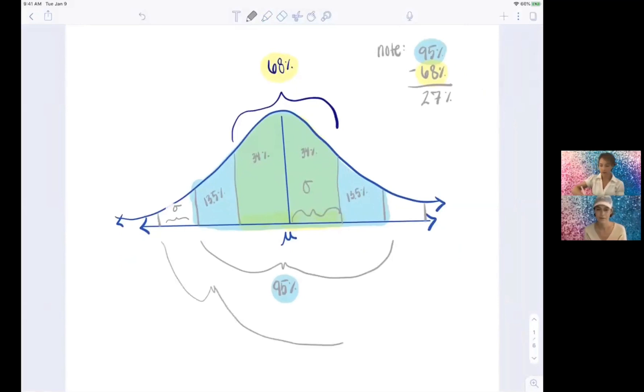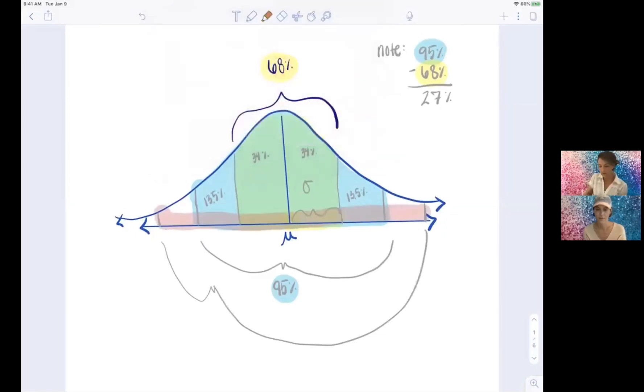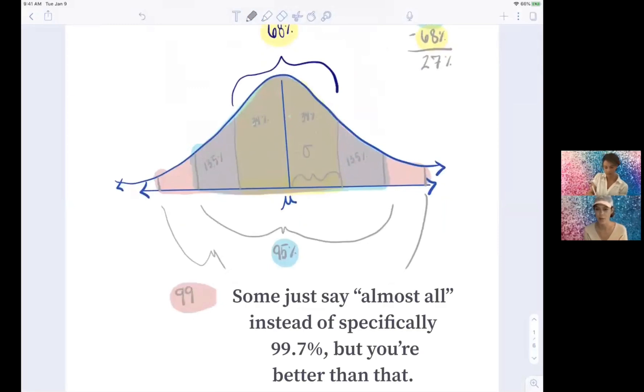What percentage of the data would we have within three standard deviations of the mean? So that's going to be 99.7, and we can kind of do the same logic as before to figure out what each little region would be there.